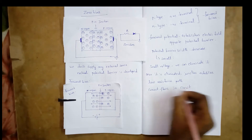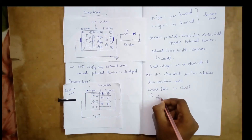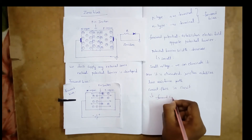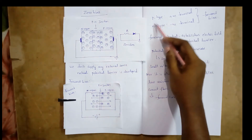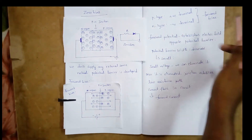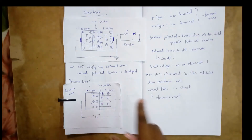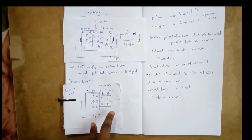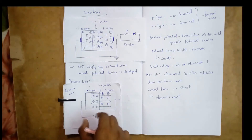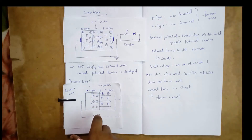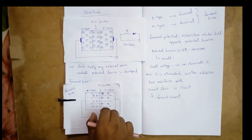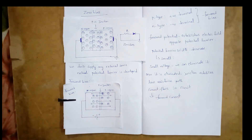Current flows in the circuit. This current is the forward current. The junction establishes a low resistance path, so the current flows in the circuit. This current is known as forward current.